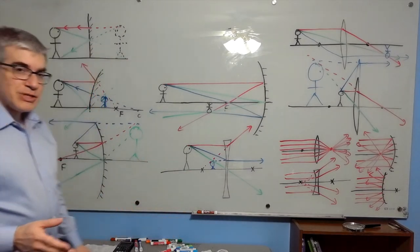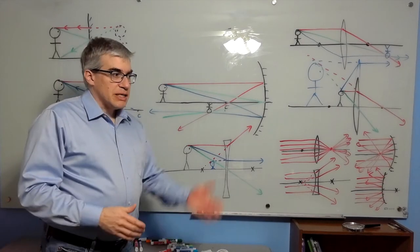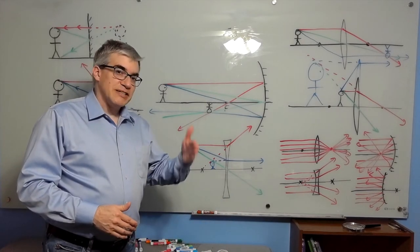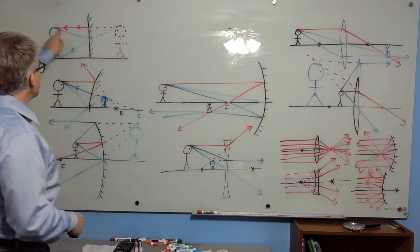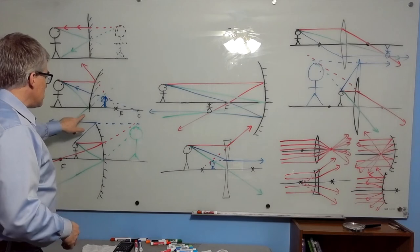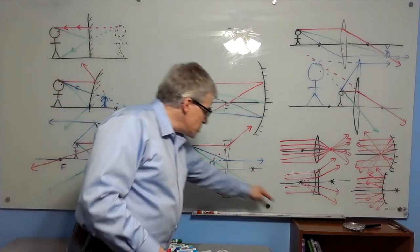The green beams are actually the simplest of all. Basically, the center of a mirror is flat and the center of a lens is like a window. So for mirrors, it just bounces off at the same angle, and for lenses, it just goes straight through.